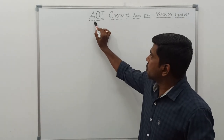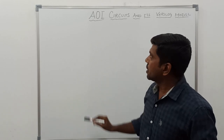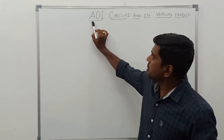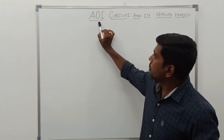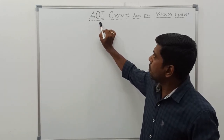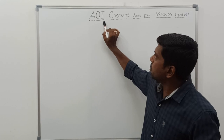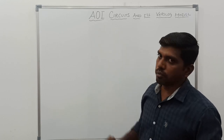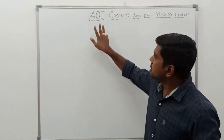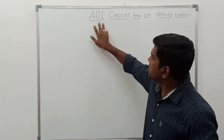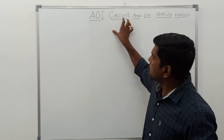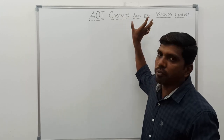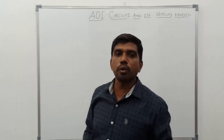So what is the representation of AOI? A represents the AND operation, O represents the OR operation, and I represents inversion. So these three operations are implemented in a single cycle, along with the corresponding Verilog HDL program.